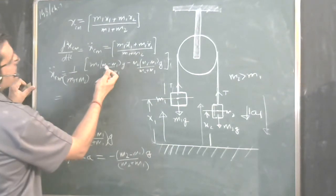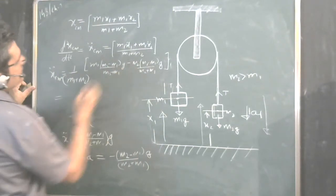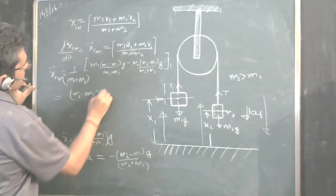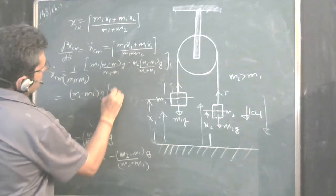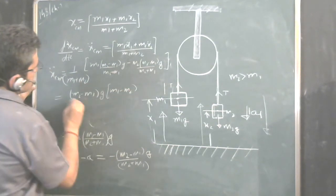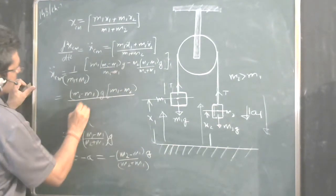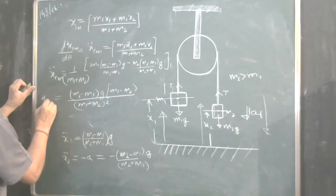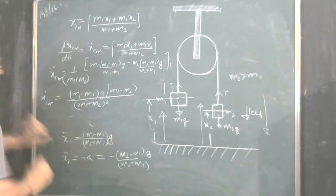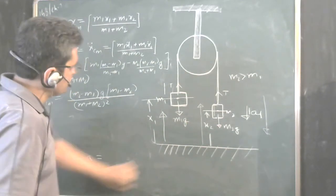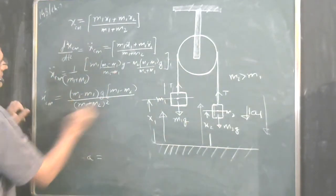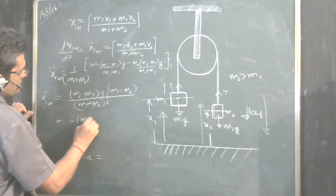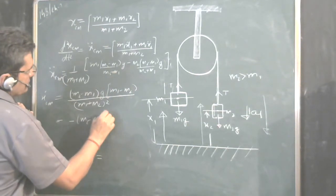So it becomes M2 minus M1 g into M1 minus M2 upon M1 plus M2 whole square is x center of mass. This is the acceleration of center of mass. It is coming like this take the minus sign out so it becomes minus M2 minus M1 whole square g upon M1 plus M2. So this is the acceleration of center of mass.